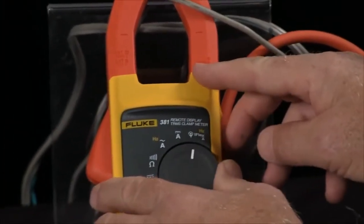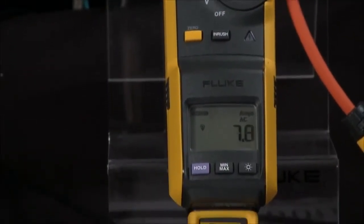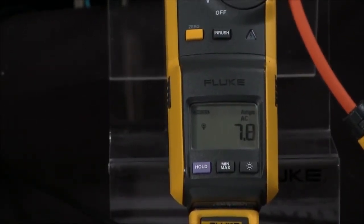Then we change our display over to the iFlex, hit the inrush key and start our motor, and we can get the inrush current.